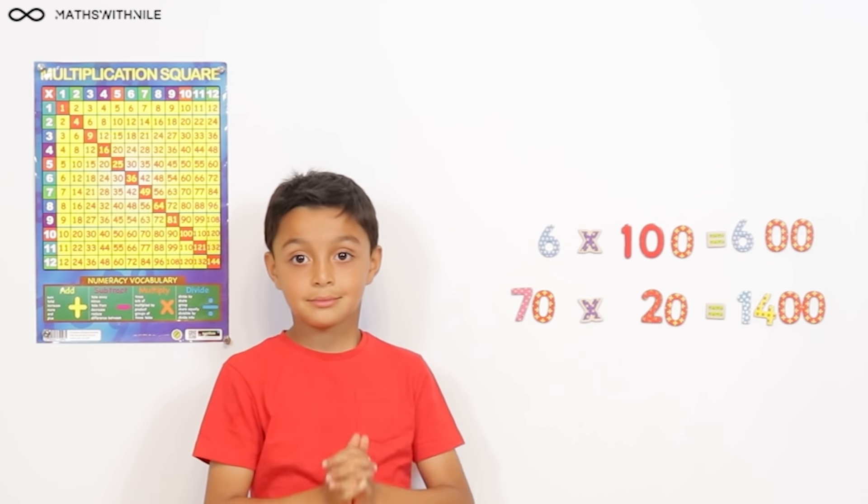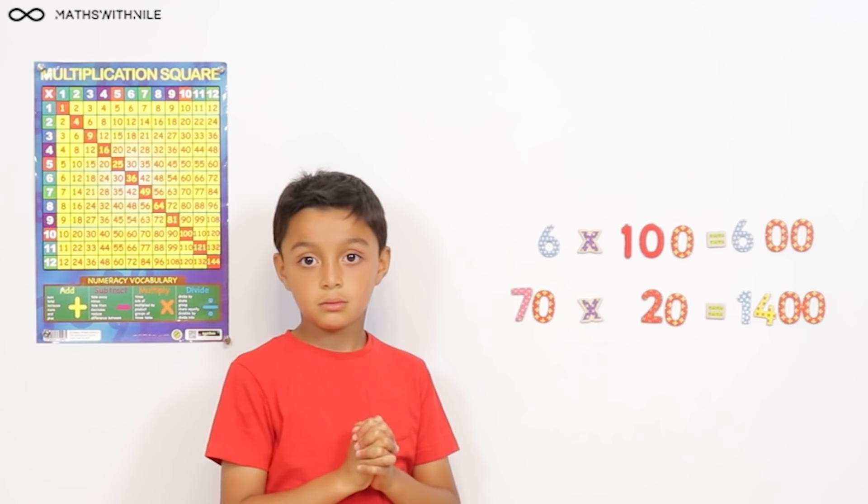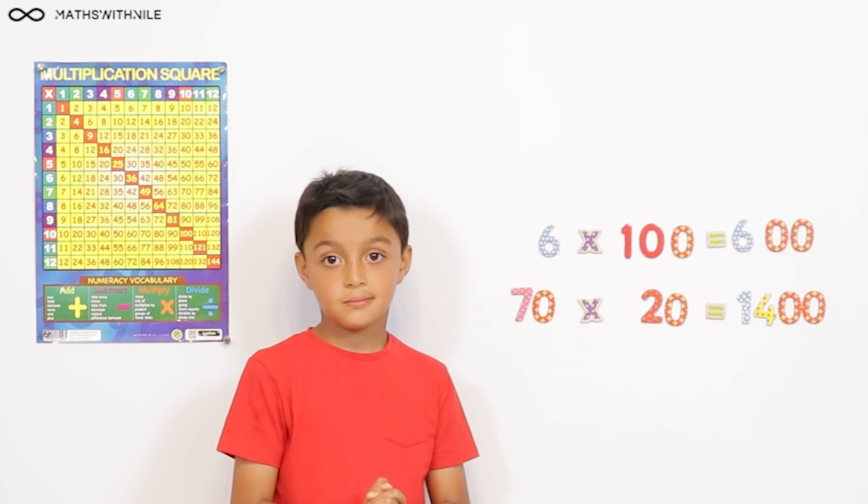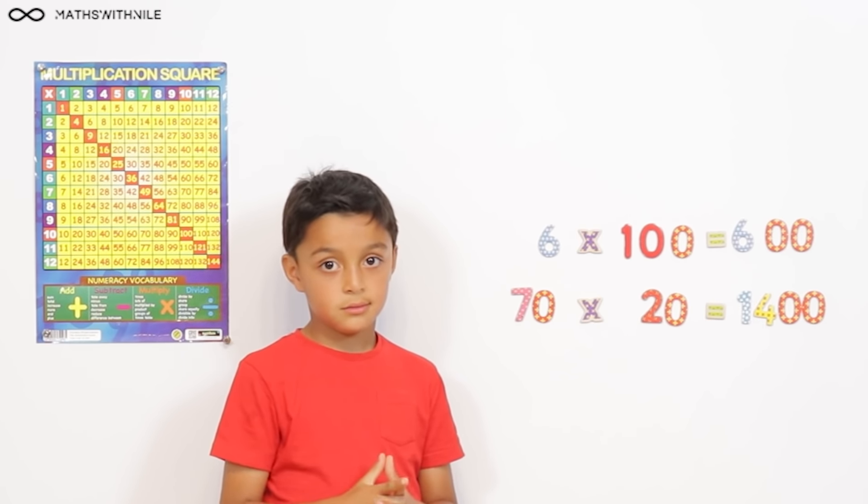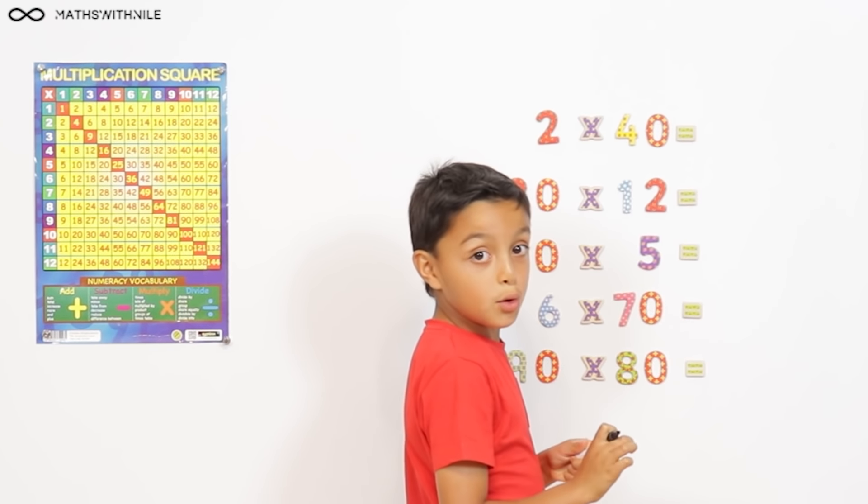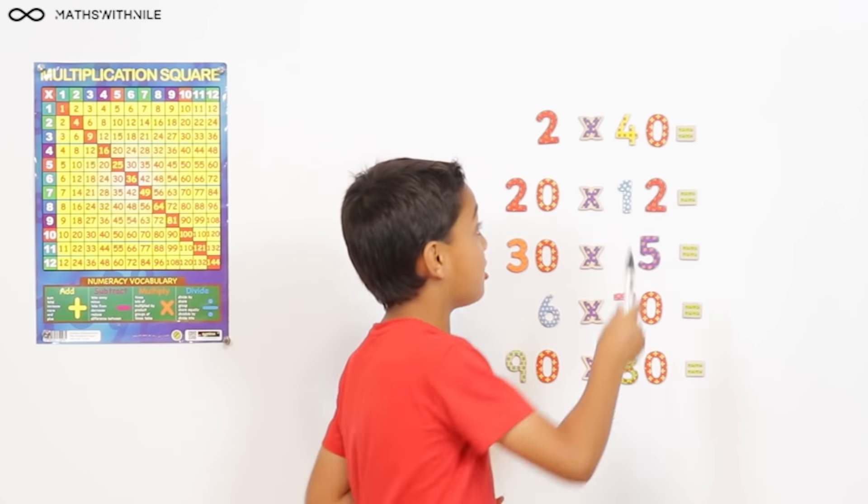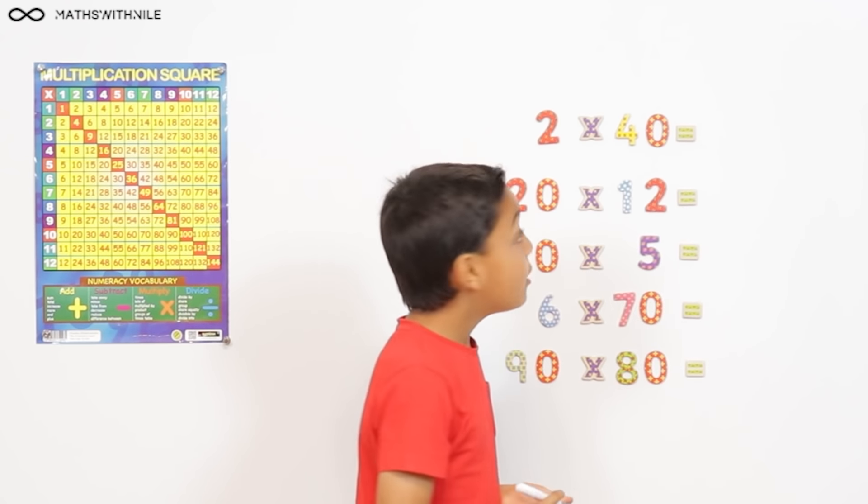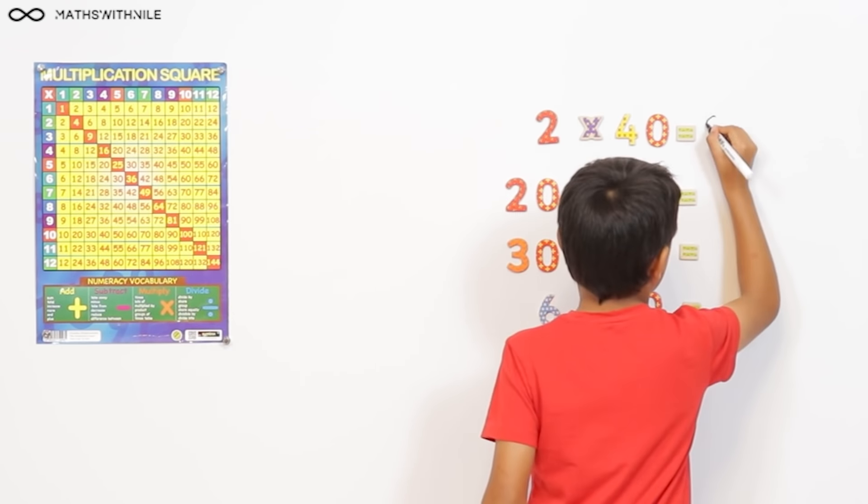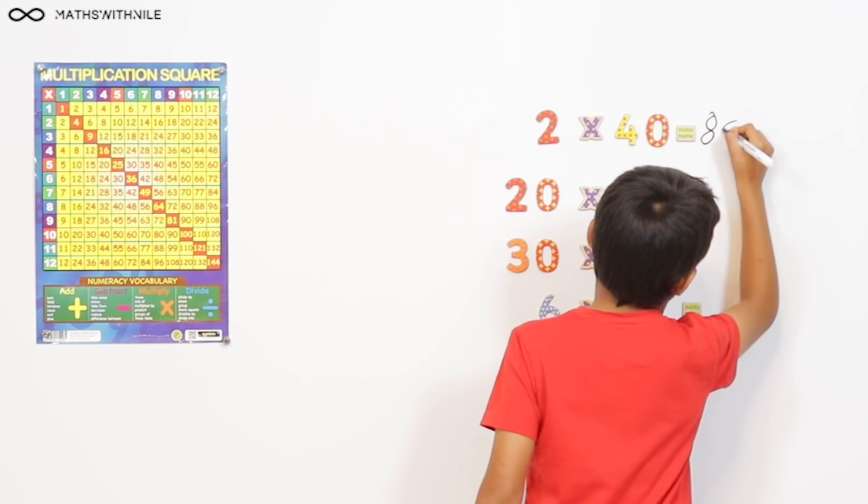Good job, Niall. So now we're going to do some more questions. I want you to remember those very important rules, okay? Okay. 2 times 40. So 2 times 4 equals 8, and add that 0 equals 80. Very good.